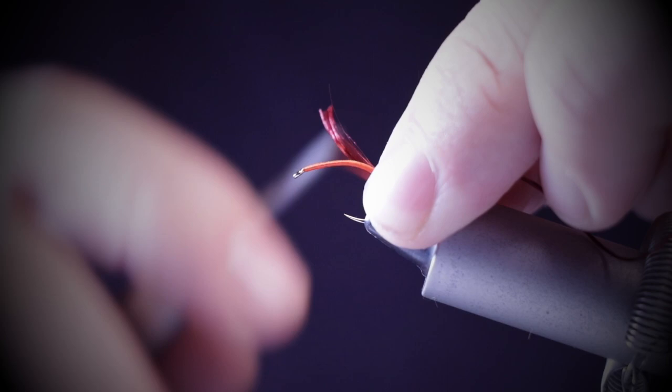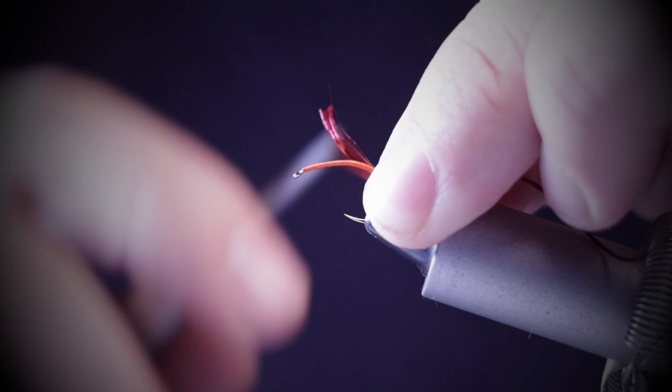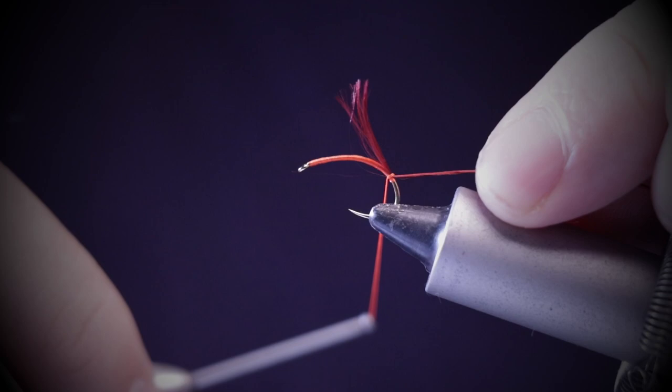What I like to do is just line it up against the body, put a couple of loose wraps in and just pull it tight.